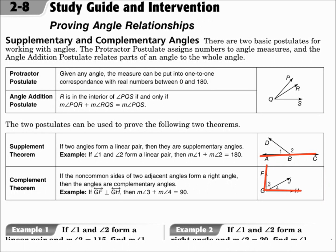So when you have angles forming, look for straight lines when they come together — you know those add up to 180. And if you have any right angles when angles come together, you know that those are going to add up to 90.